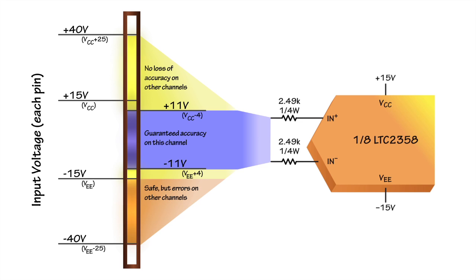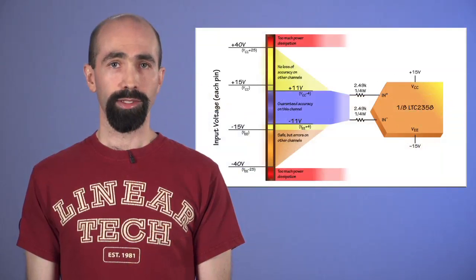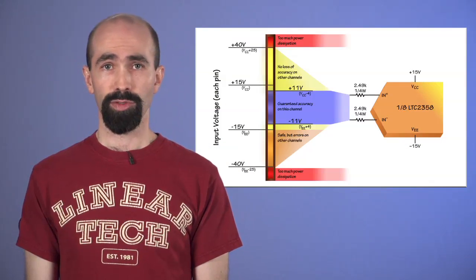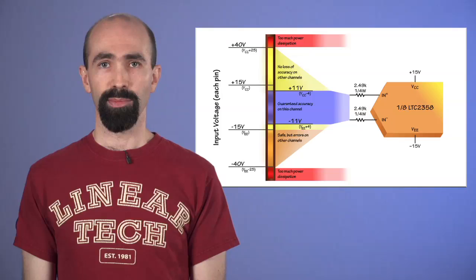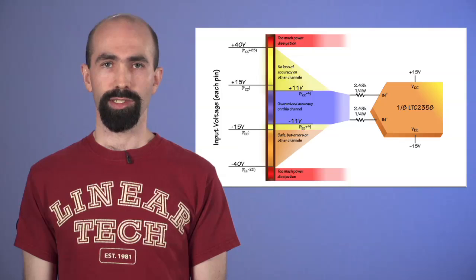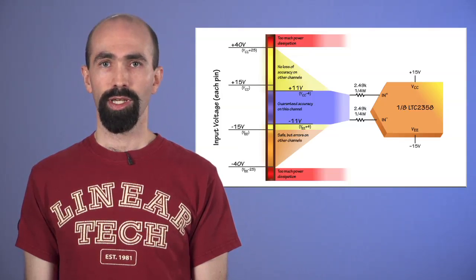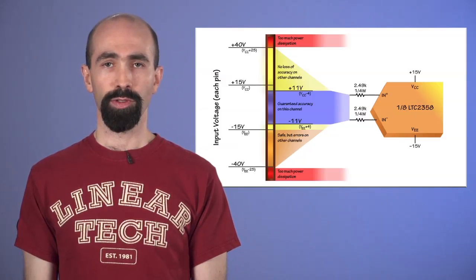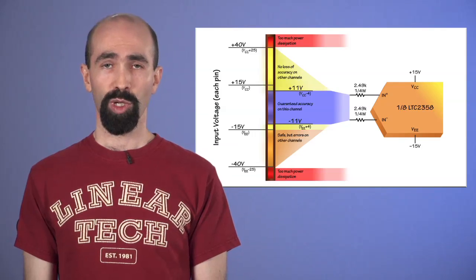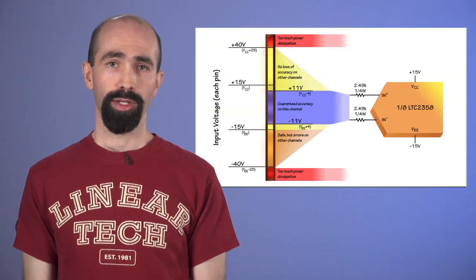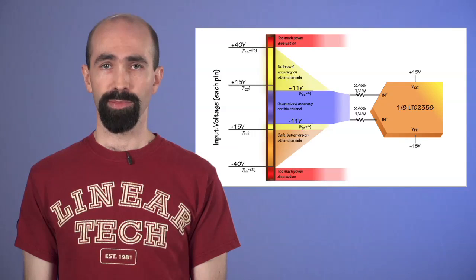Pulling inputs below the negative supply down to minus 40 volts will also not cause damage, but will corrupt the accuracy on other channels. Beyond these limits, power dissipation in the ADC and resistors risks damage. Other values of resistor can be used for other possible ranges of overdrive, keeping in mind the 10 milliamp current limit. For example, a 10 kilohm resistor would allow 100 volts. Notice that the power dissipation with 100 volts across 10 kilohms is 1 watt, so a higher power resistor is required. But the solution is still extremely simple and robust.